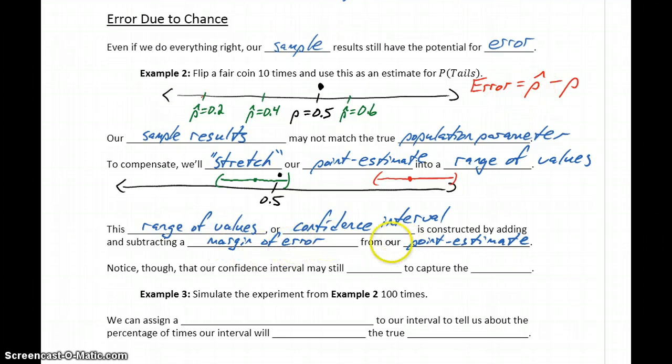So it's a little bit different than the error we talked about up here, but a margin of error will be calculated, added and subtracted from our point estimate to give us this range of values. But we have this problem that sometimes that confidence interval still fails to capture the actual population parameter.